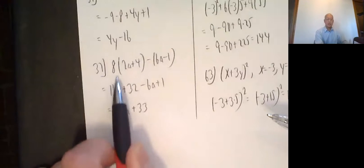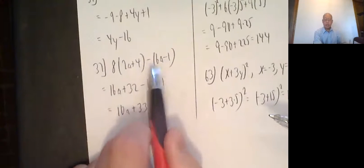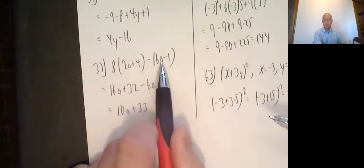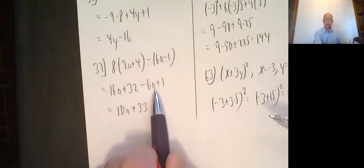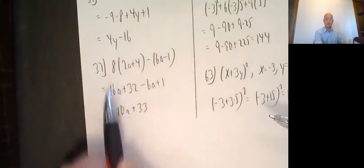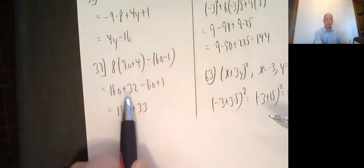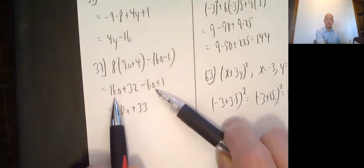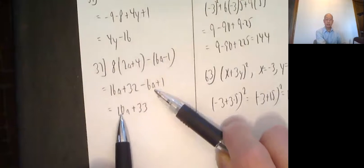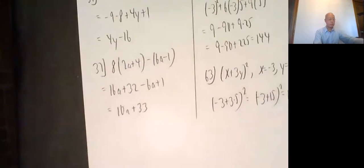In 37, I distribute the 8. If a minus sign distributes, all it does is change the sign. So this becomes a negative 6a minus a minus 1 is plus 1. 8 times 2a is 16a. 8 times 4 is 32. All right, then combine a with a. 16a minus 6a is 10a, and then 32 plus 1 is equal to 33.